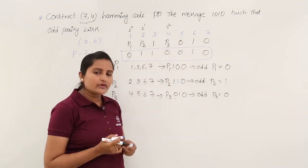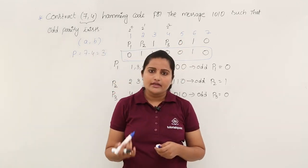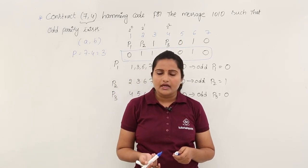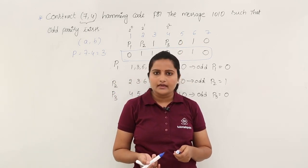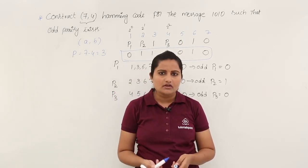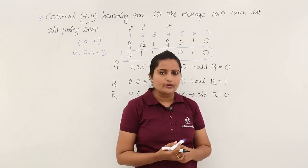In this way we generate Hamming codes using either even parity or odd parity, and the same procedure applies for different message bits as well.